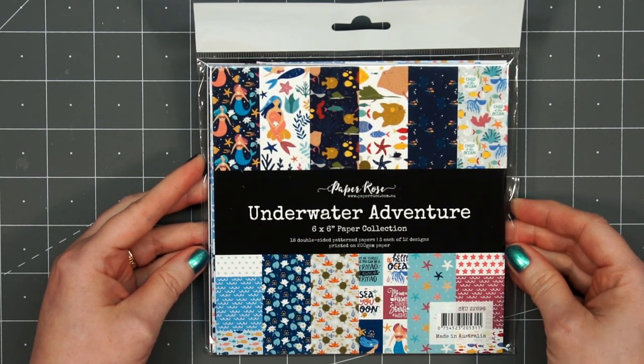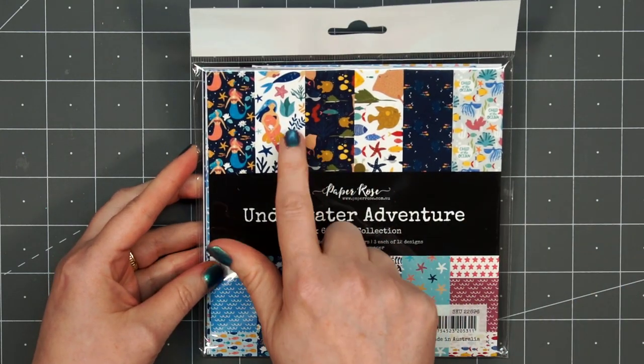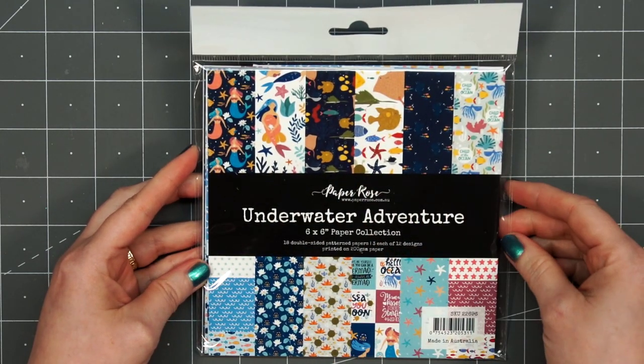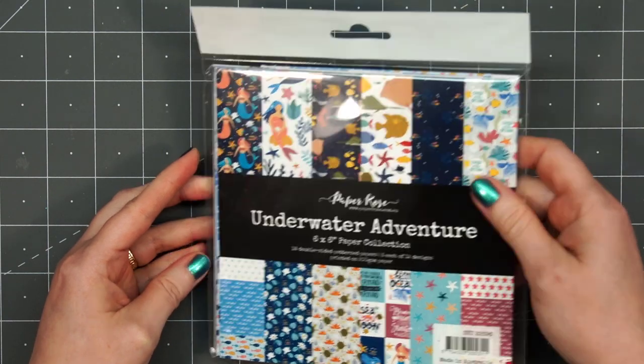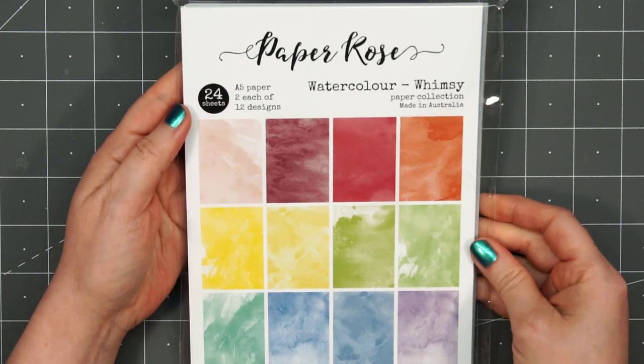Today I'm sharing some cards I made using Paper Rose's Underwater Adventure 6x6 Paper Collection. There are 18 double-sided papers included in this collection and several of them have a bunch of cut-apart images and sentiments.